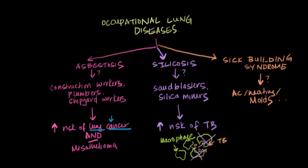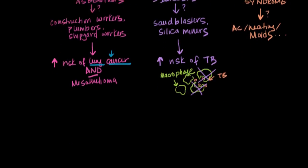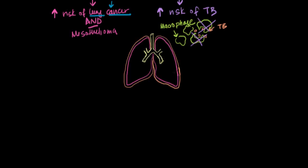These three types of occupational lung diseases share a common pathogenesis. Whether we're inhaling asbestos fibers, silica particles, or molds in sick building syndrome, those particles get deposited into the tissue of the lungs. White blood cells scattered throughout the lung tissue then engulf any dust particles — silica, asbestos, or molds — engaging in battle against these harmful particles.